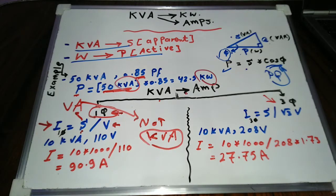If we have a single phase load of 10 kVA and operating voltage of 110 volt, then the current of this load equals 10,000 divided by 110 equals 90.9 amps.